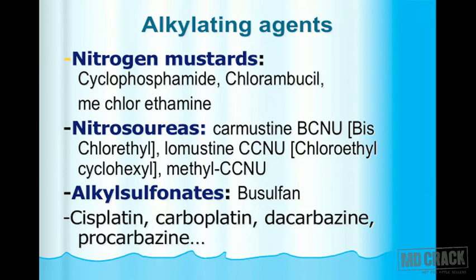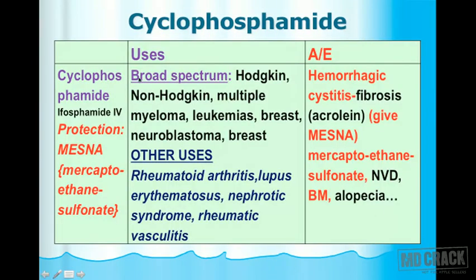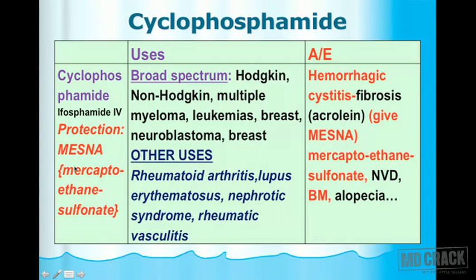The most important agent on this slide is cyclophosphamide. Cyclophosphamide has a related compound ifosfamide, available by intravenous route. Cyclophosphamide produces hemorrhagic cystitis as a characteristic toxicity. To prevent this, a specific agent called MESNA (mercaptoethane sulfonate) is given as protection against hemorrhagic cystitis.